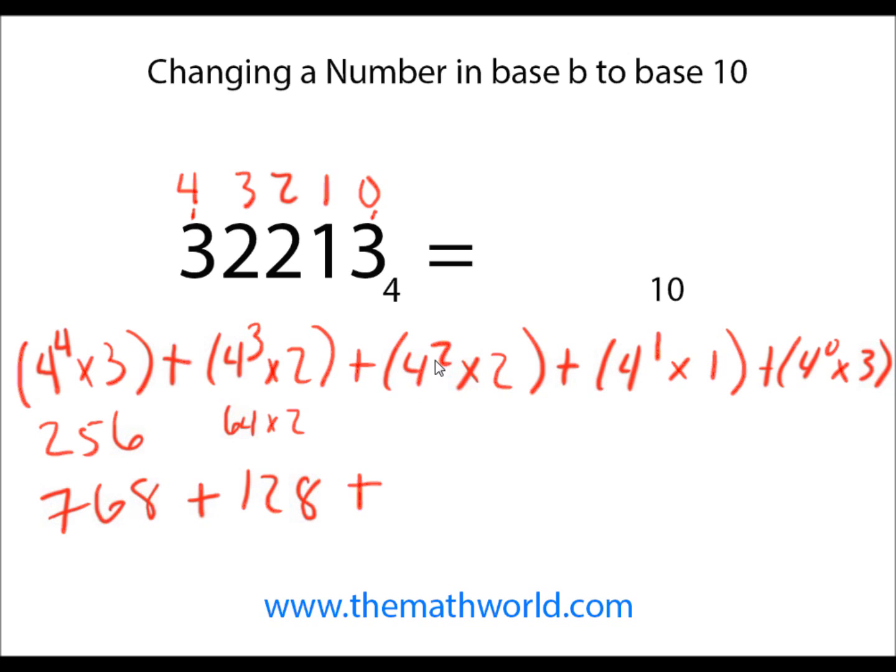We're going to add that to 4 squared, 16 times 2 is 32. We're going to add that to 4, 4 times 1. And then the last one, 4 to the 0th power is 1 times 3 is 3. So when we add up all of these numbers, we get 935.